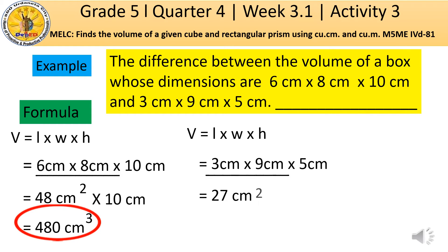Then, 27 cm² times the height which is 5 cm and the product is 135 cm³. Therefore, the volume of the rectangular prism is 135 cm³.